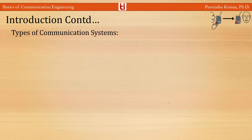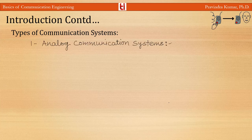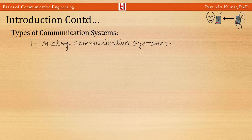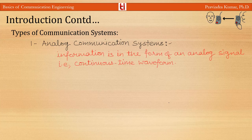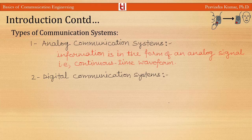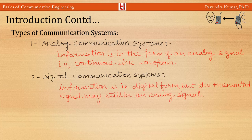Communication systems can be broadly divided into two types. In an analog communication system, the information to be transmitted is in the form of an analog signal — that is, a continuous time waveform. In a digital communication system, the information to be transmitted is in digital form, but even though the message is in digital form, the transmitted signal may still be an analog waveform.